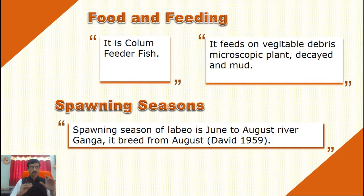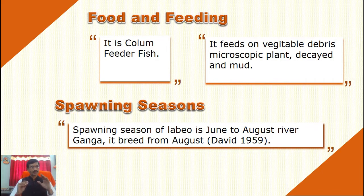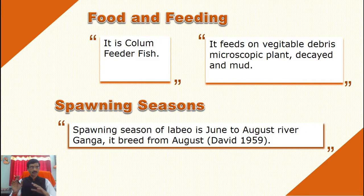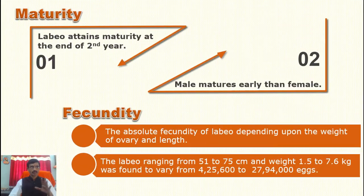The spawning season and breeding season are the same. The spawning season of Labeo is June to August in River Ganga. The scientist David found in 1959 that the breeding season is August. However, as per book references, Labeo rohita breeds from end of June up to the first week of September — about four months is the breeding period.